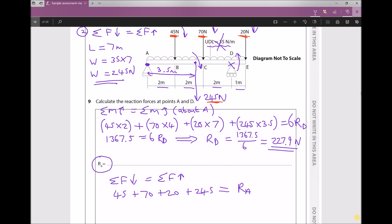Now we already know what RD is. We've already calculated it. It's 227.9. So we might as well input that into our equation. Next we should simplify our left hand side by adding 45 + 70 + 20 + 245. And that gives us a total of 380. So 380 = RA + 227.9.